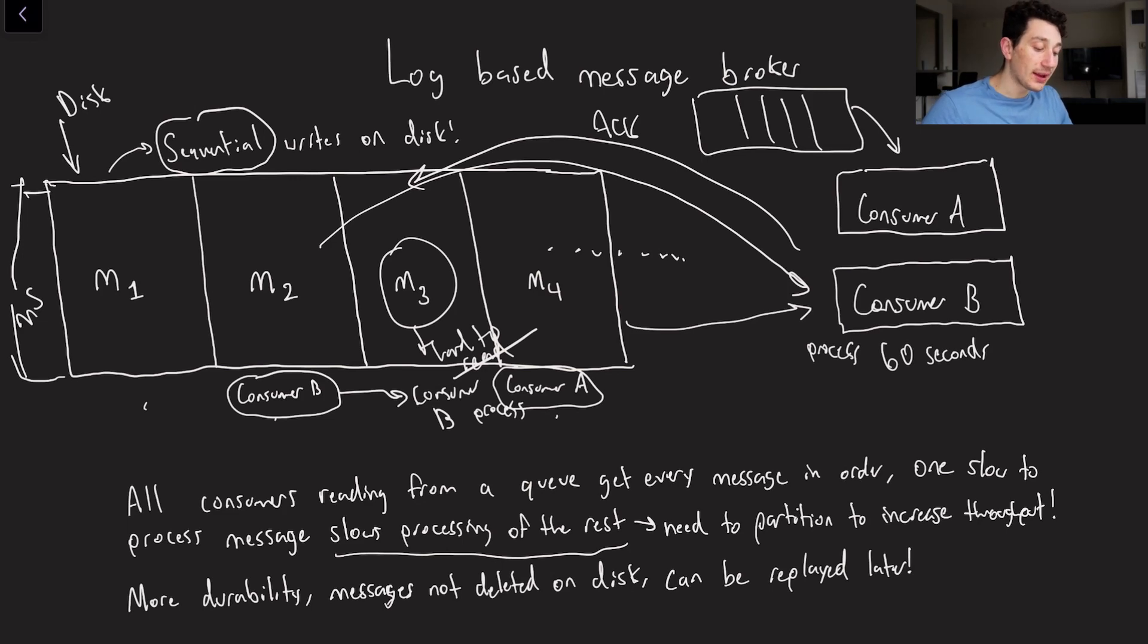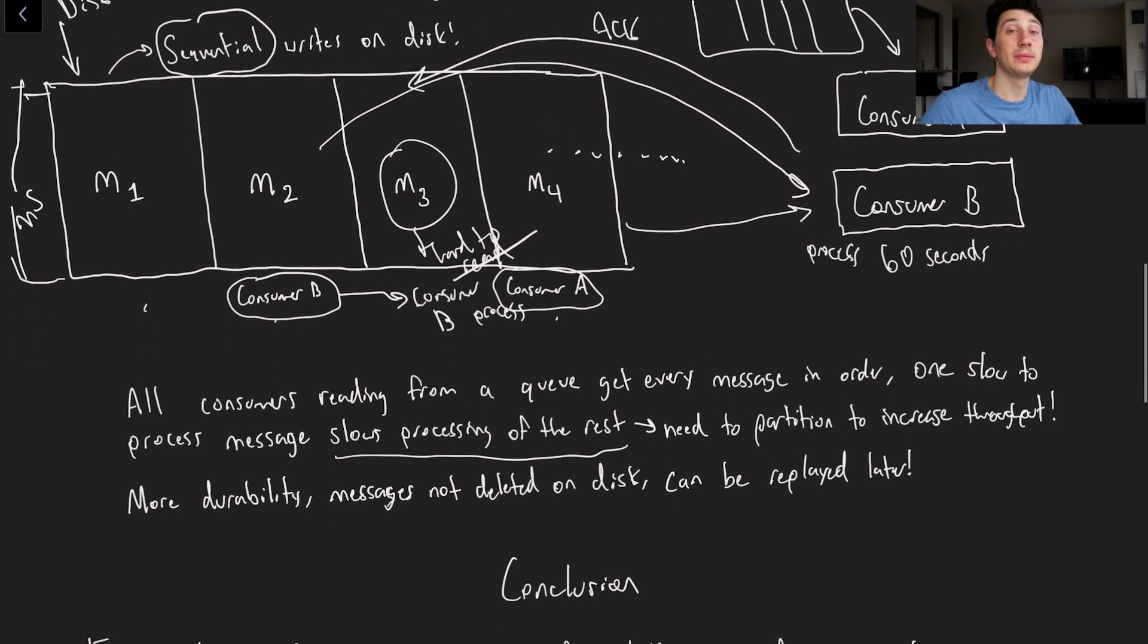At the same time, the really nice thing about the log-based message broker is that our messages are durable. Not only are they on disk if our machine were to go down, but more importantly, we don't actually delete them once we've read them. And what that means is that if for whatever reason we want to add an additional consumer in the future to reread those messages, or perhaps we're just convinced that we missed a message in one place or another, we can actually just reread them all and perform all of our computations or processing again.